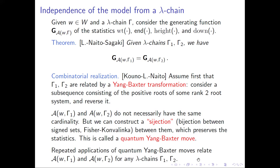We constructed an explicit sidejection between these two admissible subsets and showed that this sidejection preserves statistics as it should. This is called the quantum Yang-Baxter move. You can apply repeated sidejections to relate the admissible subsets for any two lambda chains gamma_1 and gamma_2. For people who know tableau combinatorics, these Yang-Baxter moves correspond to J-moves exchanging two columns in a Young diagram.